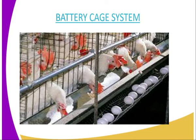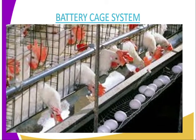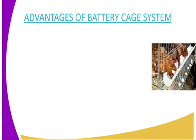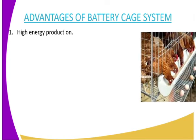You can see that the eggs, the feed, and the water are at different points or different positions. We'll now go to the advantages of the battery cage system. The first point is high egg production.